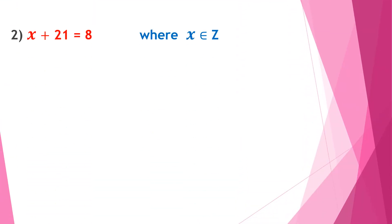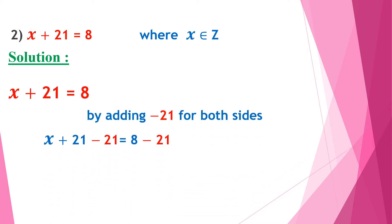Another example: if x plus 21 equals 8, find the value of x or the solution set where x belongs to the integers. By the same method, we take the additive inverse of 21 and add it to both sides: x plus 21 minus 21 equals 8 minus 21, so x equals 8 minus 21, which is negative 13. The integers include positive, negative, and zero, so negative 13 belongs to the integers, and the solution set is {negative 13}.